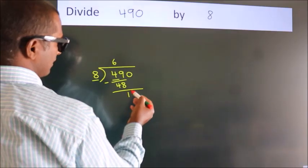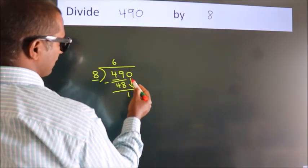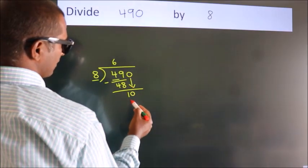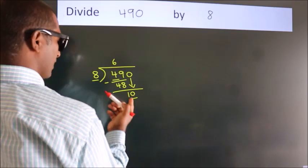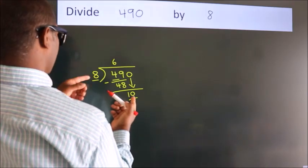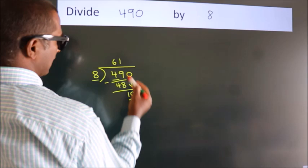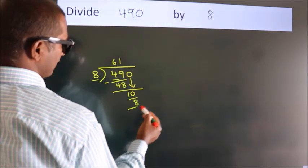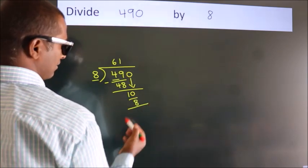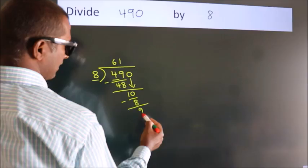After this, bring down the beside number. So 0 down. So 10. A number close to 10 in 8 table is 8 once 8. Now we subtract. We get 2.